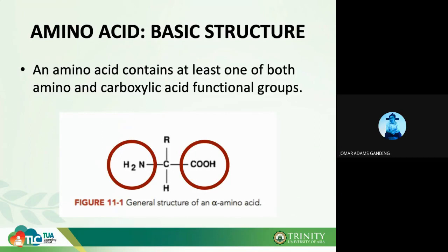For the basic structure of an amino acid: it contains at least one amino group and one carboxylic functional group located on the alpha carbon. This is where other amino acids attach, forming the peptide bond. The amino group and carboxylic group combine to form the peptide bond. The R group is the unique group for each amino acid.